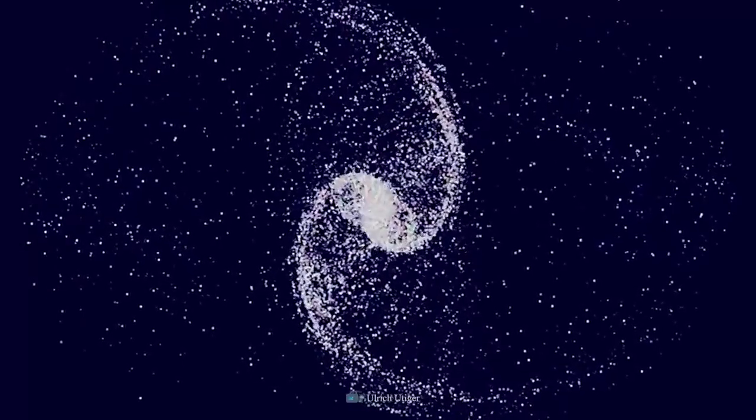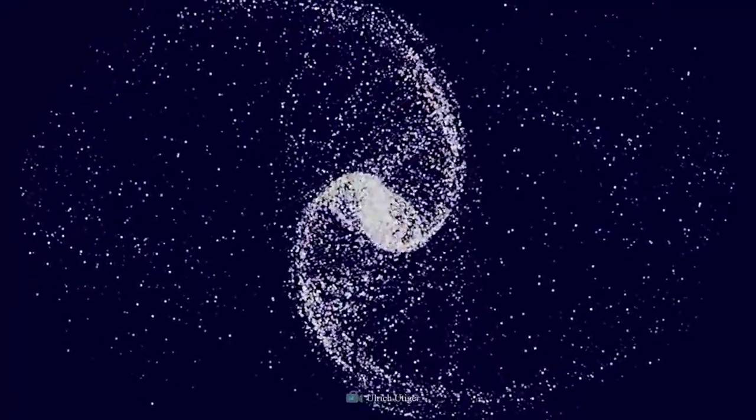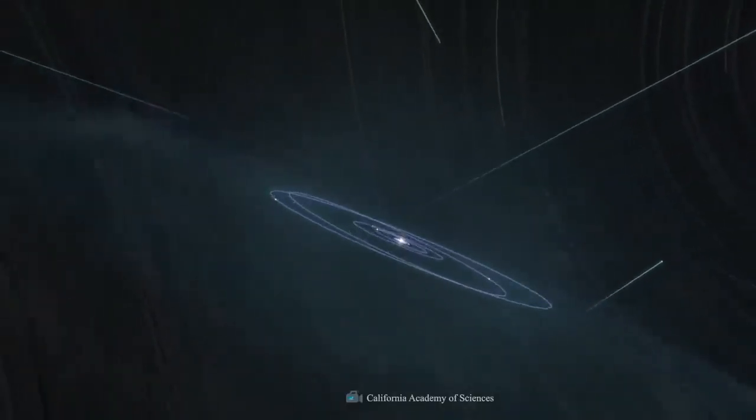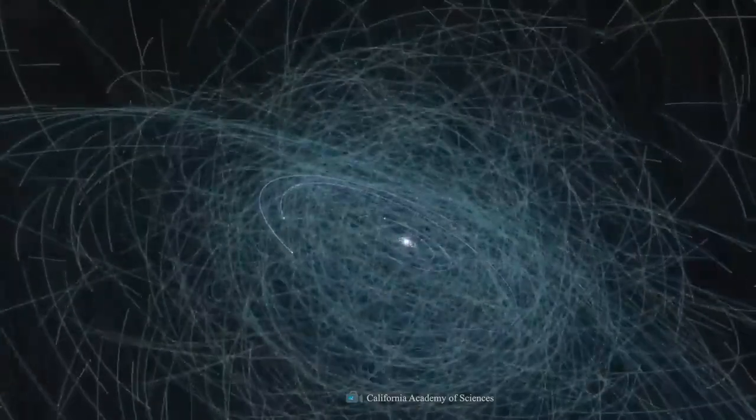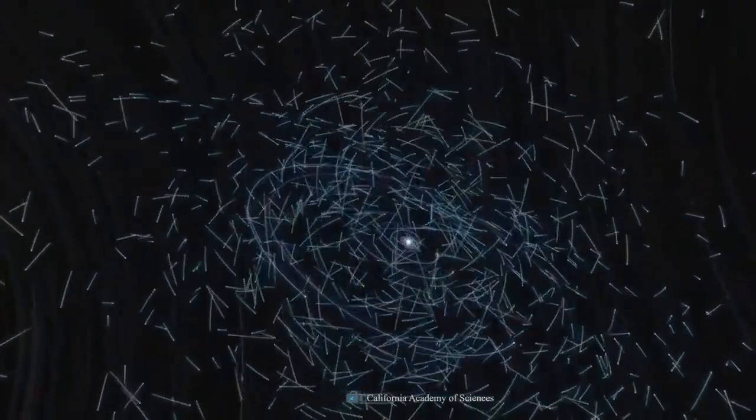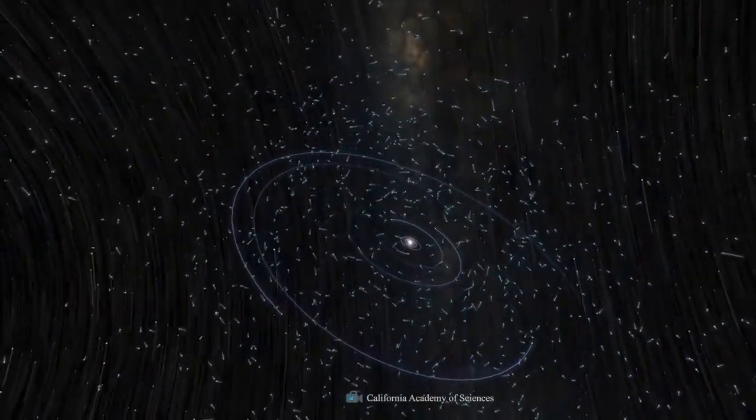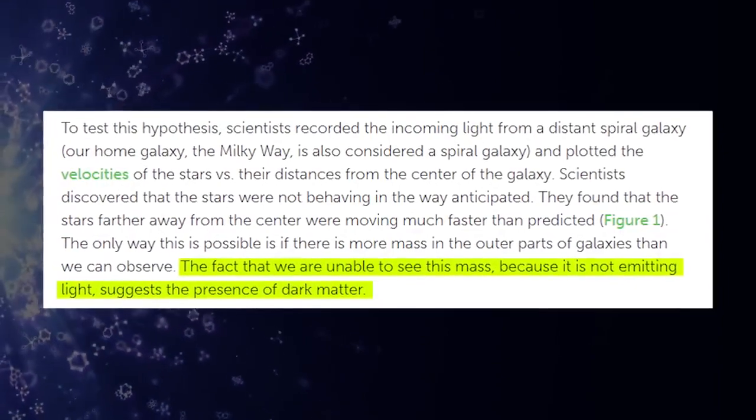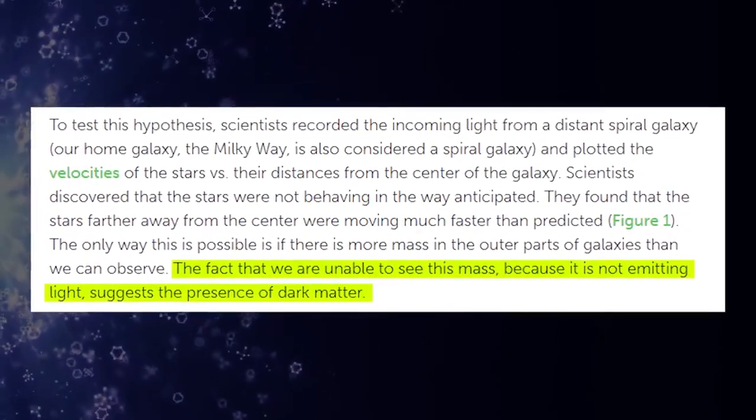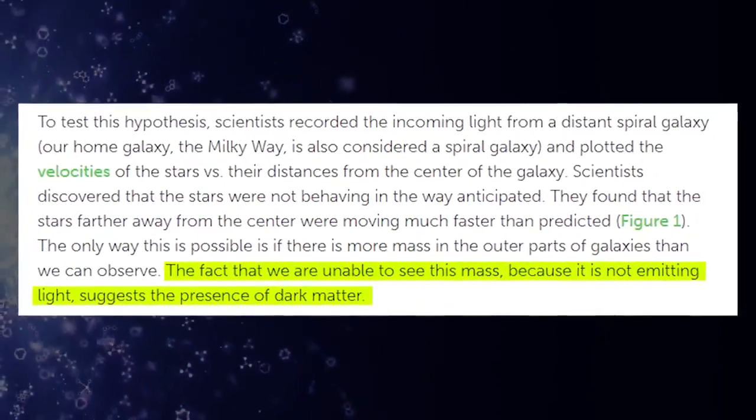The star's behavior surprised astronomers who had been studying them for decades. They discovered that stars further from the center were traveling significantly faster than expected. More mass in the outer regions of galaxies than we can see is the only explanation for this. This mass must be made up of something scientists call dark matter.